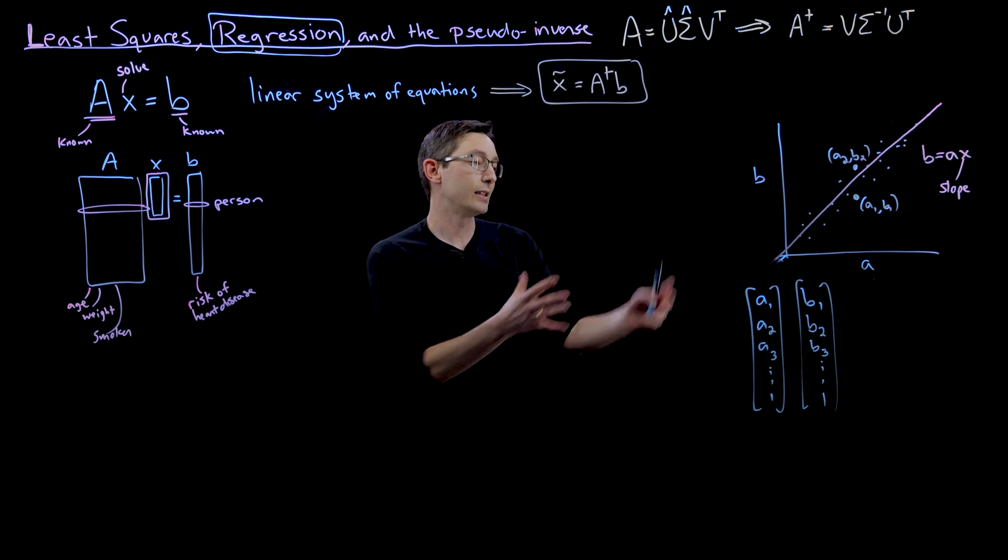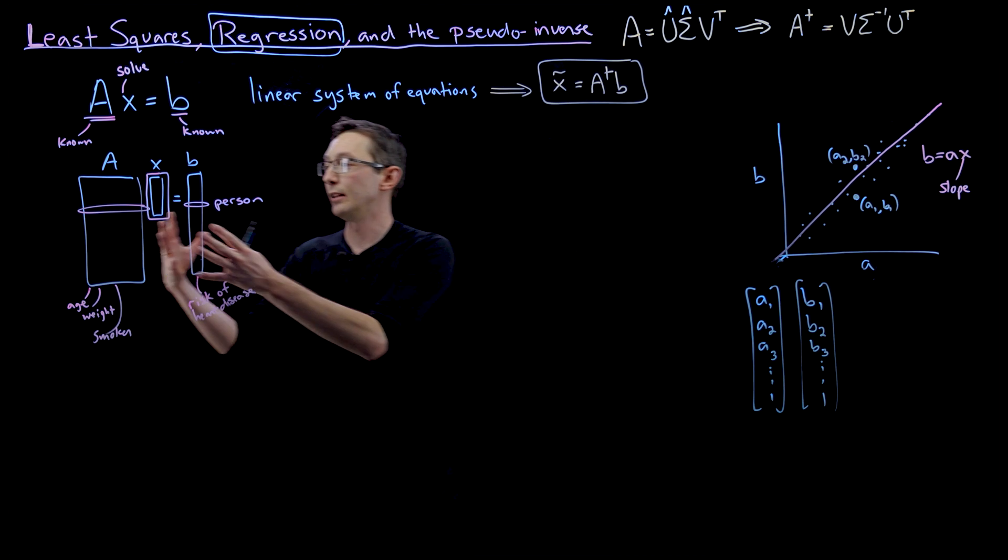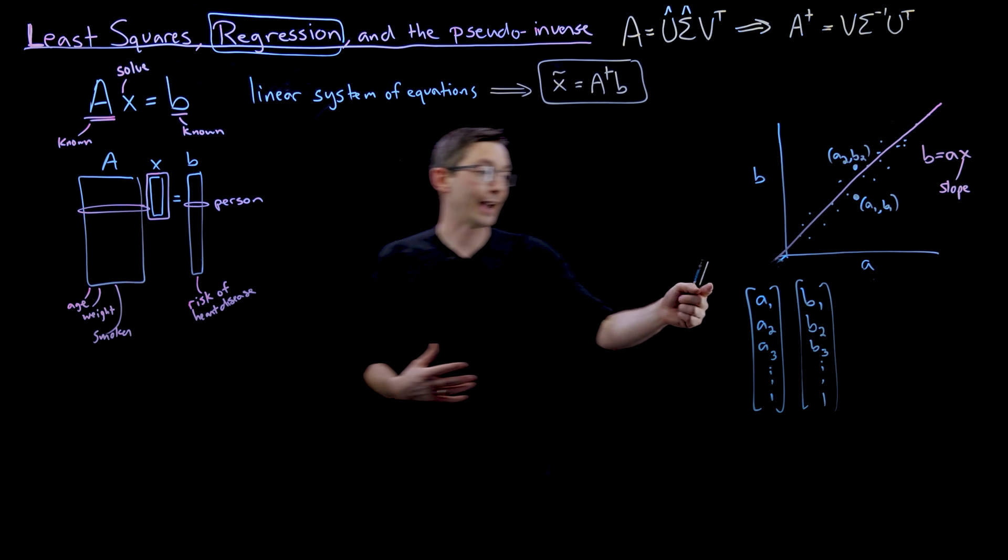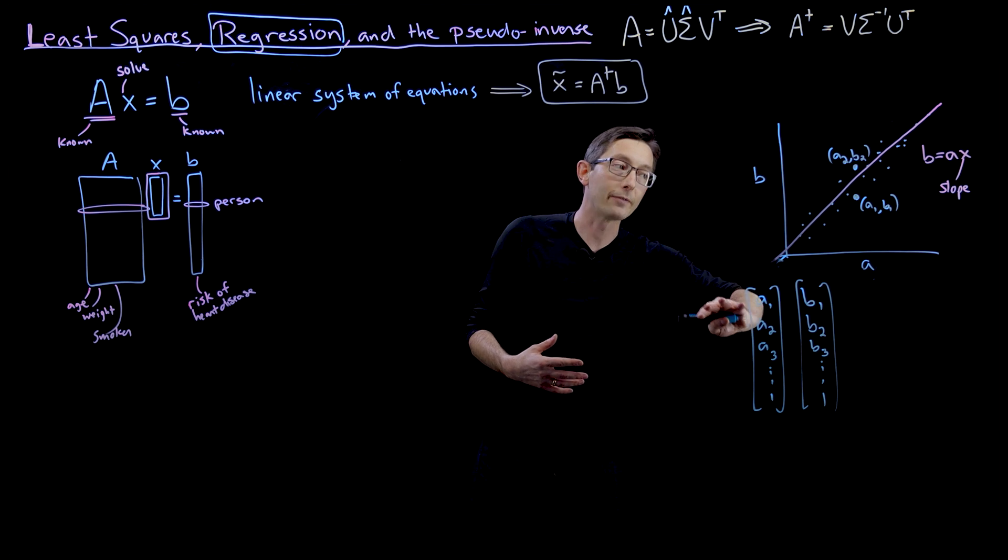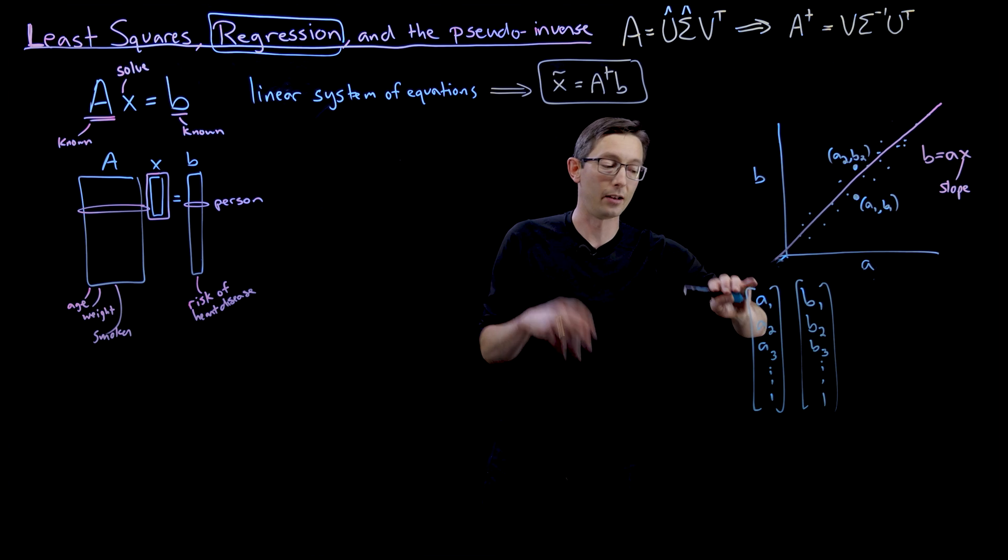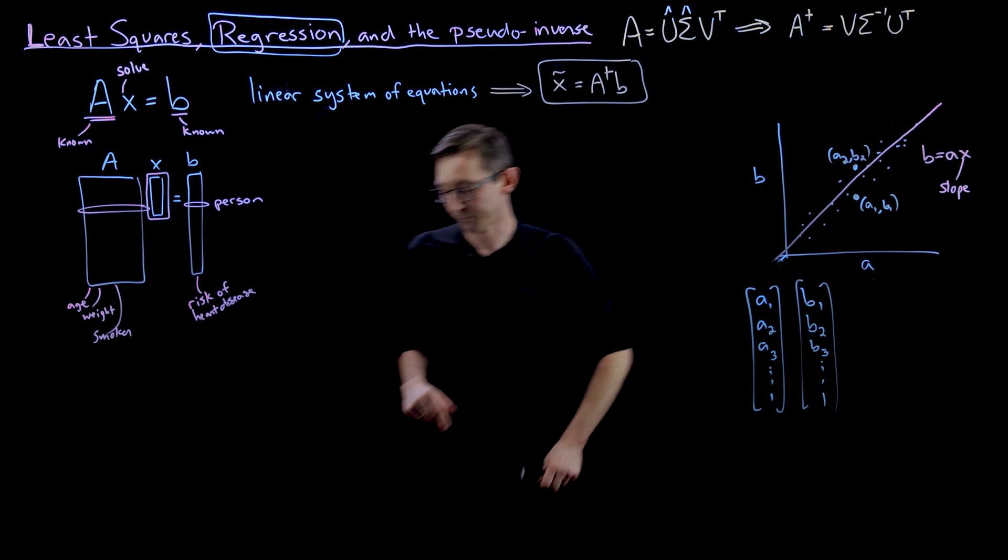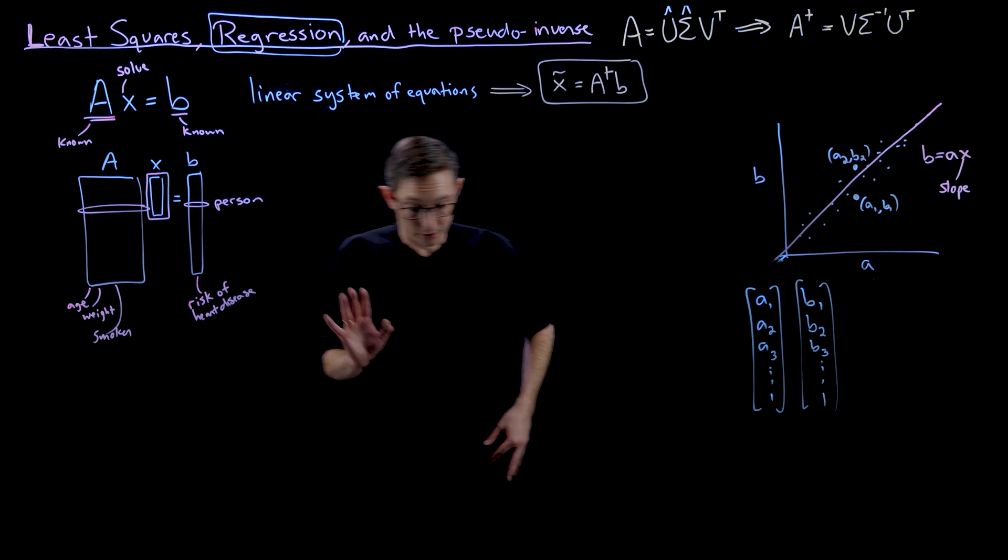And what's nice is that this is going to generalize so that if we have multiple factors, you know, a vector of measurements for person one, person two, person three, we can find the best fit slope X that models B.